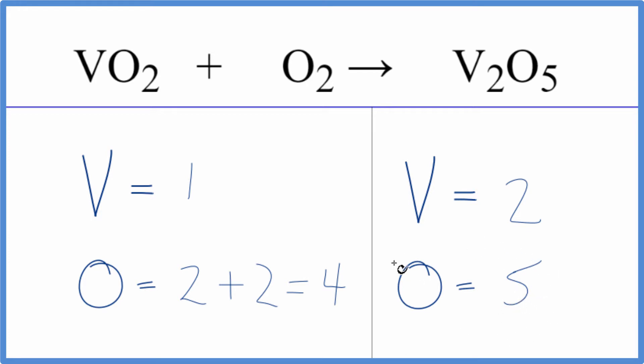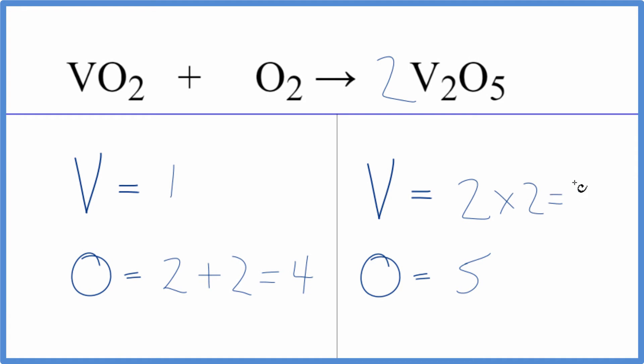So when I look at this I see right away I need to get this to be an even number for this to be even possible. So why don't we just put a two in front of the V₂O₅. Two times two that gives us four, five times the two that'll give us ten.